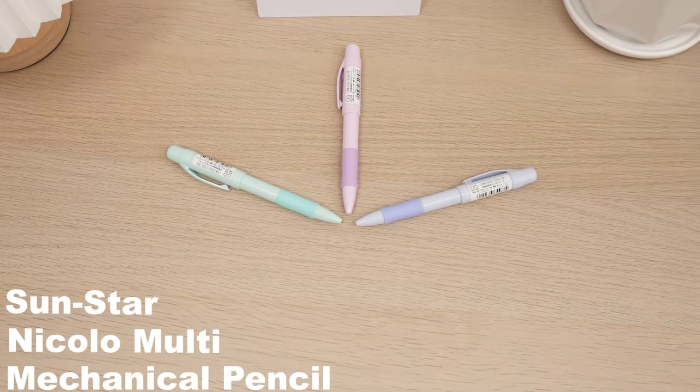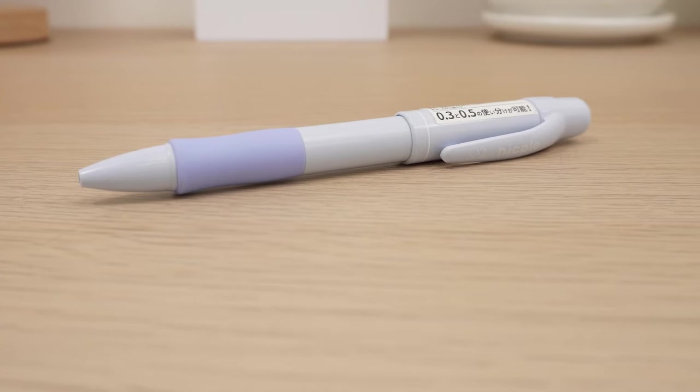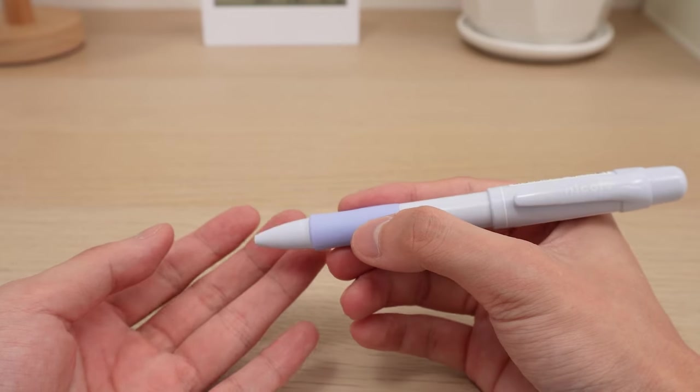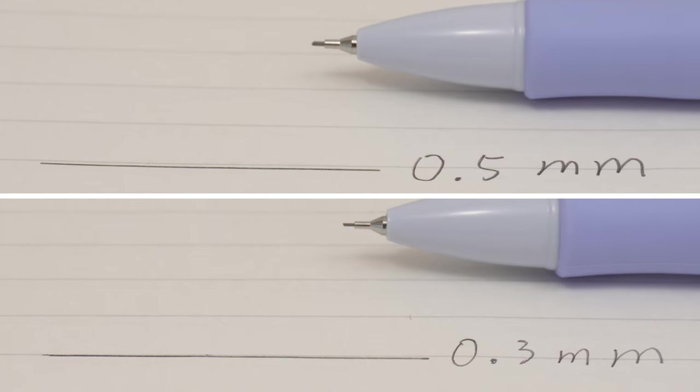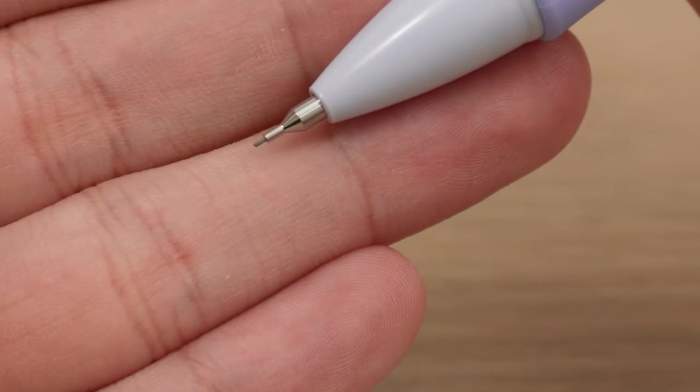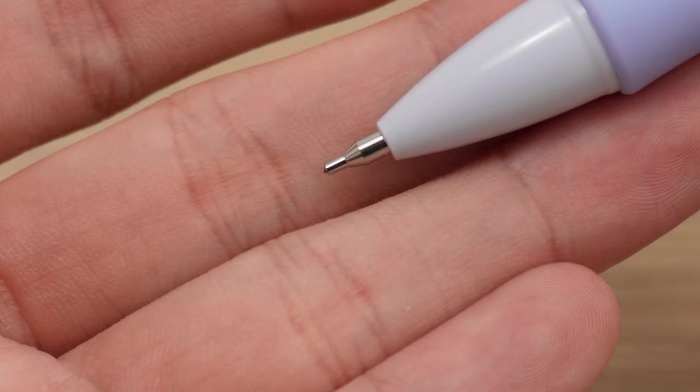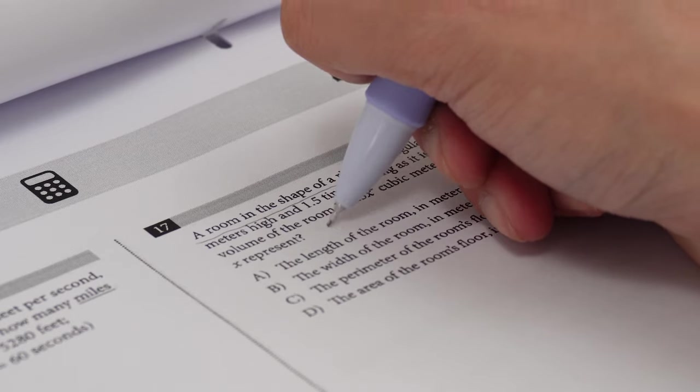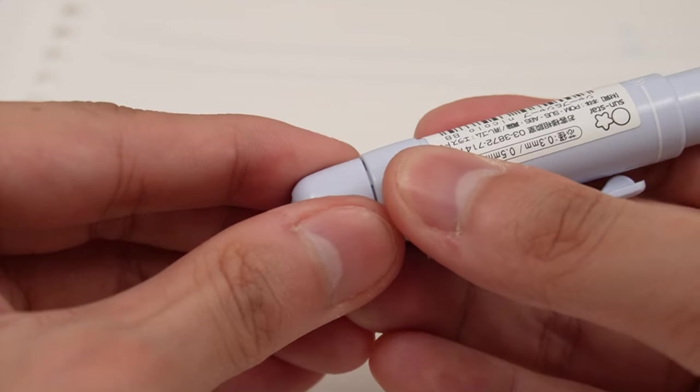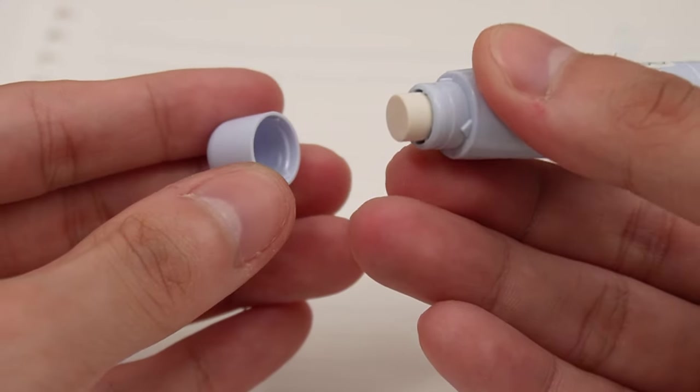Moving on to the Sunstar Niccolo Multi-Mechanical Pencil, a comfort and versatility combo. Its rounded body fits your hand naturally, and it houses two lead sizes in one pencil. Twist the pen one side for a 0.3mm lead, and the other side for a 0.5mm lead. Perfect for various writing tasks. And don't forget, there's a hidden eraser under the cap for easy fixes.